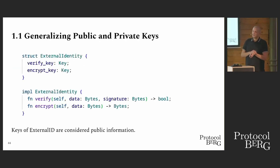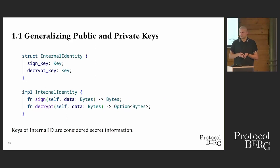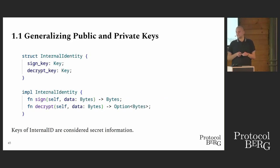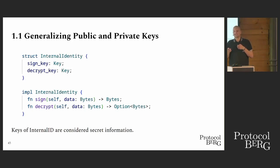So how do we generalize public and private keys? We say we have an external identity that has a key for verifying messages sent to it, a key for verifying messages that come from it, and a key to encrypt messages we want to send to it, with methods verify and encrypt that apply these keys — all assumed public information. For the generalized private key, we build an internal identity with a signing key and a decryption key, where anyone who has access to these keys can send messages signed as this identity or decrypt messages sent to it. These two keys can be the same, or totally different — we only assume they are some bytes that some cipher takes, fulfilling the defined interfaces.